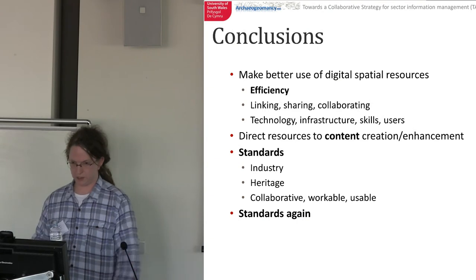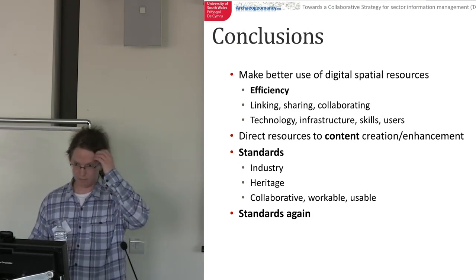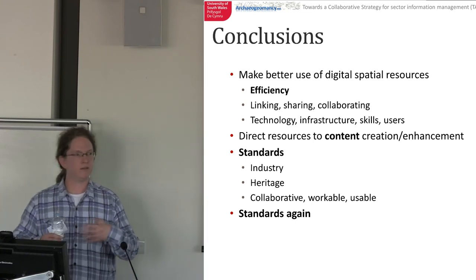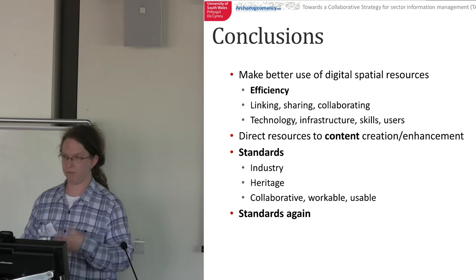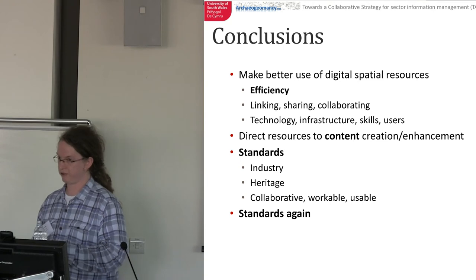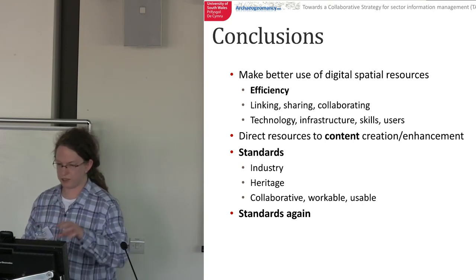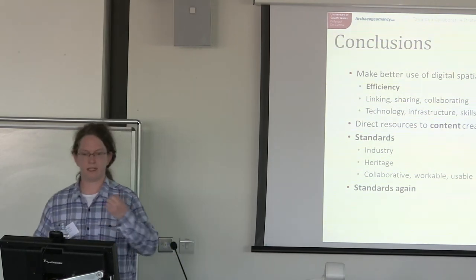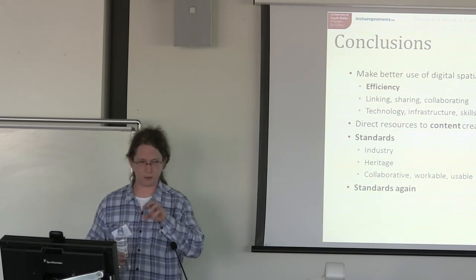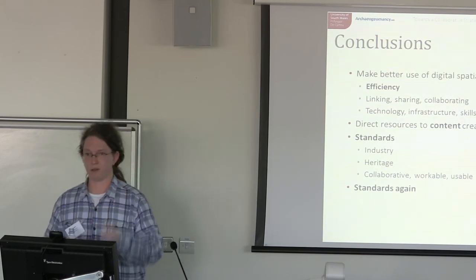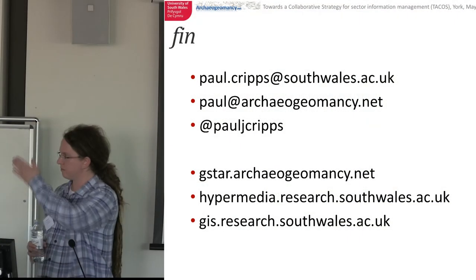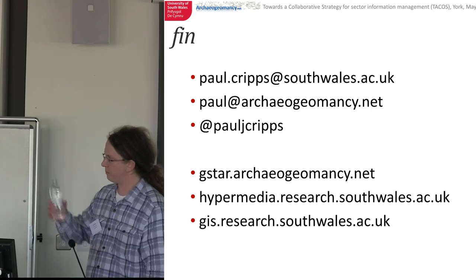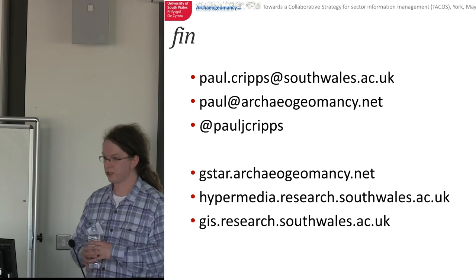We need to make better use of our spatial data resources. Efficiency is the key word, especially in times of austerity — not efficiency as in making people redundant, but as in freeing them up to do more useful work through linking, sharing and working together, leveraging technology infrastructure, improving our shared skill base, and focusing on what users actually need. We can do this using standards — industry standards, web standards, geospatial standards, heritage standards — but the standards we work with need to be collaborative, workable and usable. There are my details; all my research gets blogged on the GSTAR blog. Do feel free to get in touch. Thank you.